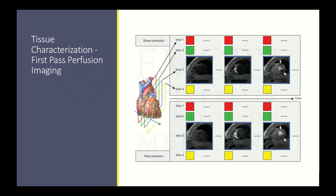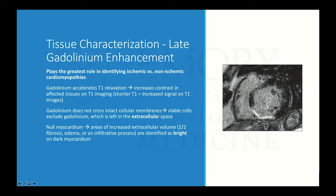There's also first-pass perfusion, where we use gadolinium and take images about 30 seconds to 2 minutes after injection — used in stress perfusion imaging for cardiac MRI. At rest you see the myocardium light up appropriately; on stress, dark defects indicate ischemia. Then we have late gadolinium enhancement, whose greatest role is identifying ischemic and non-ischemic cardiomyopathies. It accelerates T1 relaxation time — a shorter T1 means increased signal on T1 images. Gadolinium does not cross the cellular membrane; it gets stuck in the extracellular space. So areas of increased extracellular volume — such as fibrosis, edema, or infiltrative processes — will appear bright.